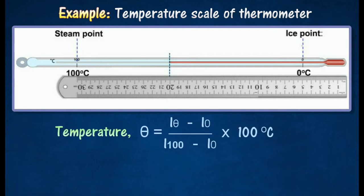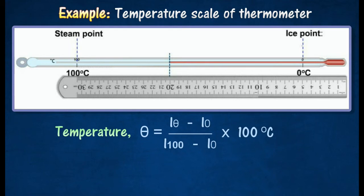The temperature of the liquid can be determined using the following formula. Thus, the temperature when the length of the mercury column is 20 cm equal to 60 degrees Celsius. Thank you for taking time to watch this.